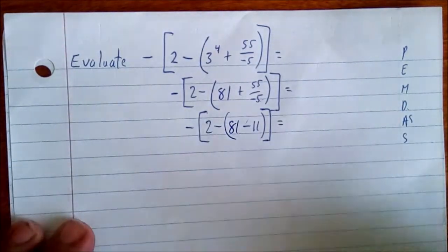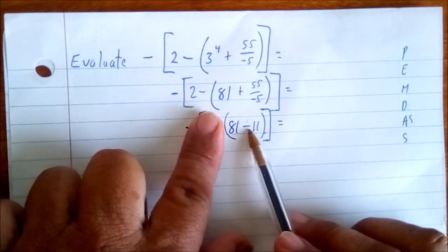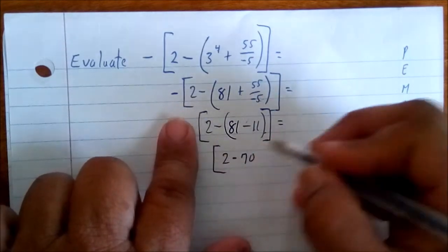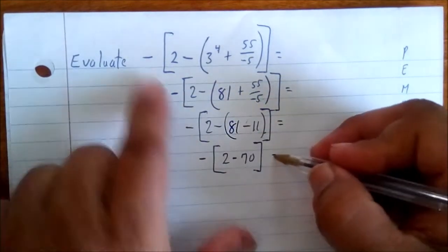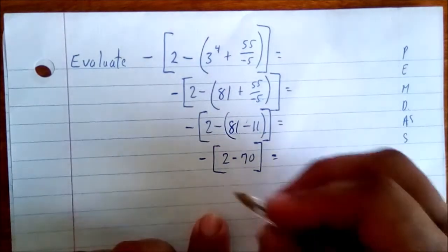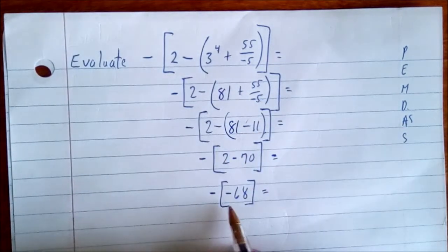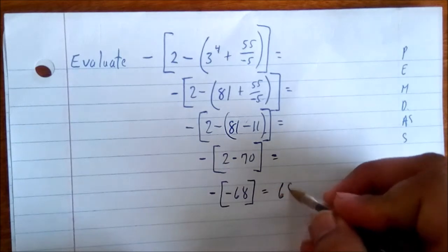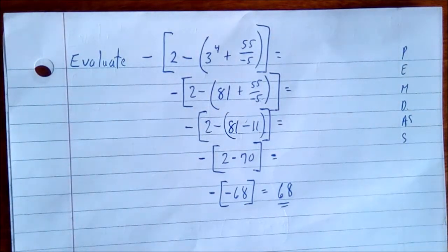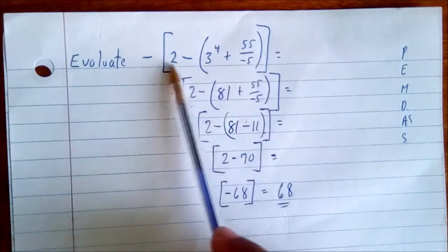Now we have 81 plus negative 11 inside the parenthesis, which gives us 70. But we still have the big brackets and the negative at the front. We now say 2 take away 70, which gives us negative 68. A negative and a negative gives a positive, so our solution is positive 68.